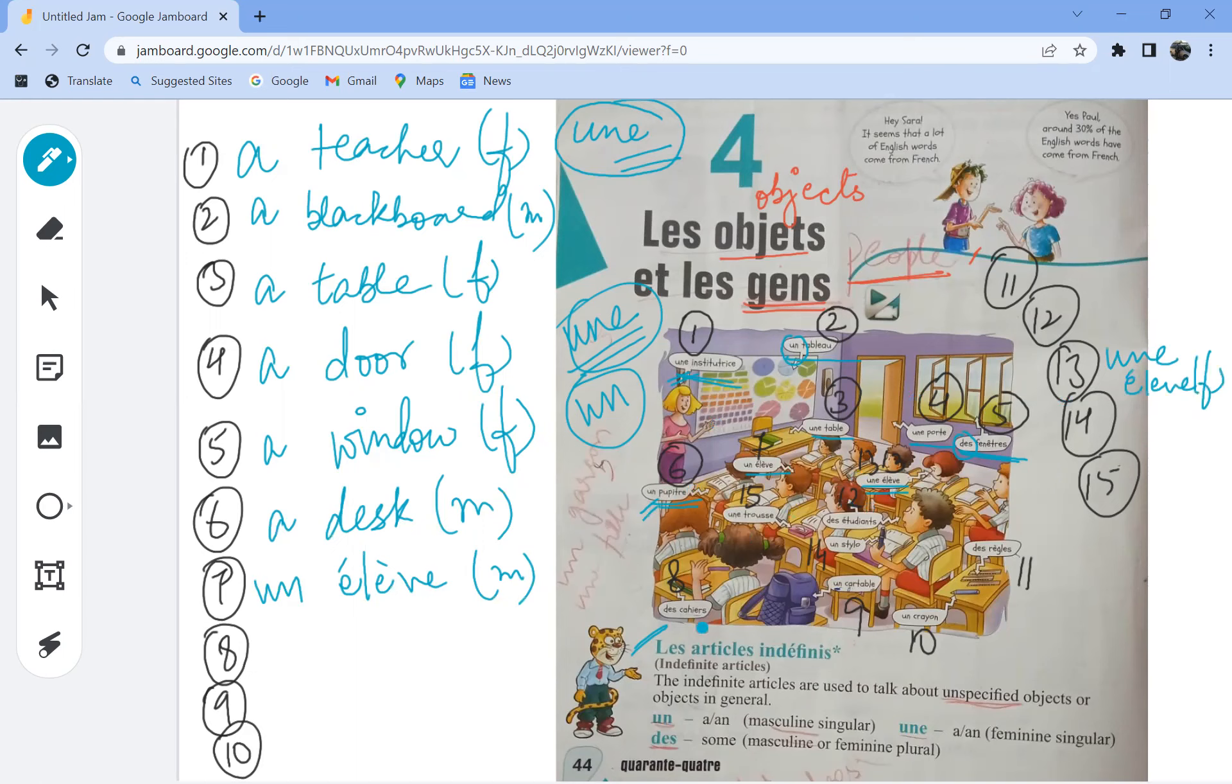Then we have number eight, un cahier, which is a notebook and is masculine. I'll tell you, so a notebook. So the seventh one becomes a child for masculine, that is un élève, and une élève is a girl child. So we write here a child, feminine.